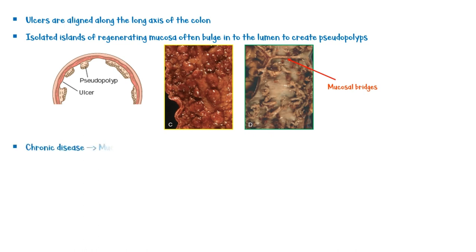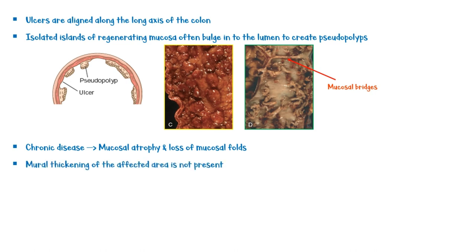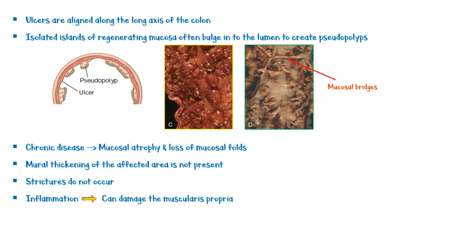Chronic disease may lead to mucosal atrophy and loss of mucosal folds. Unlike in Crohn's disease, mural thickening of the affected area is not present and strictures do not occur. However, inflammation in the mucosa can damage the muscularis propria, leading to colonic dilation and toxic megacolon, which carries a significant risk of perforation.